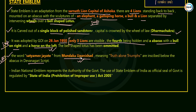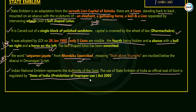The Indian national emblem represents the authority of the government. The use of the State Emblem of India as the official seal of the government is regulated by the State Emblem of India (Prohibition of Improper Use) Act 2005. So, which legislation regulates the use of the State Emblem as official seal? It is the State Emblem of India (Prohibition of Improper Use) Act 2005.